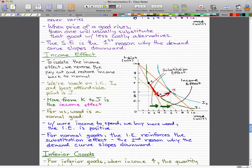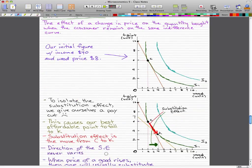Now for us, wood is a normal good. We use it for everything: paper, etc. Wood is a normal good. Now with more income to spend, we buy more wood. So the income effect is positive. Now for normal goods, the income effect reinforces the substitution effect, and that's the second reason why the demand curve slopes downward.